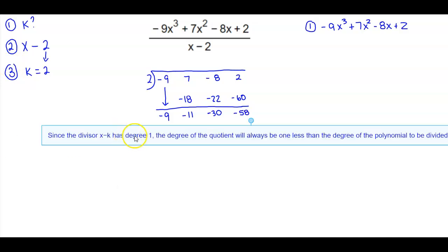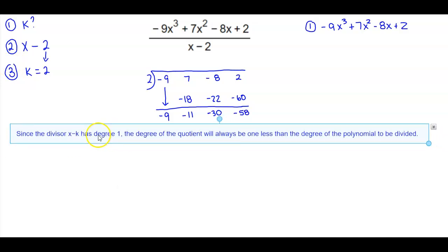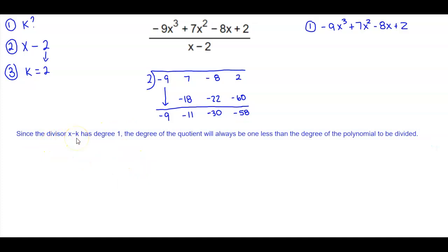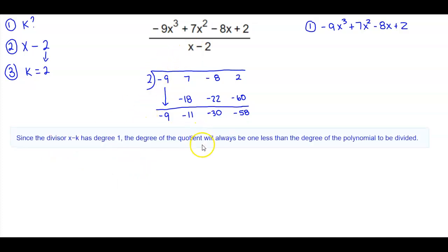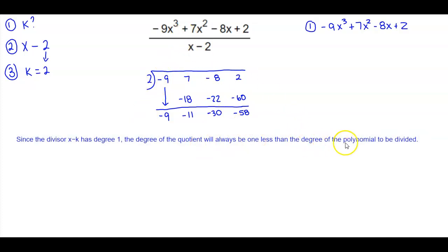Since the divisor x minus k has a degree of 1, the degree of the quotient will always be 1 less than the degree of the polynomial to be divided. So this is going to be negative 9x squared minus 11x minus 30, with a remainder of negative 58.